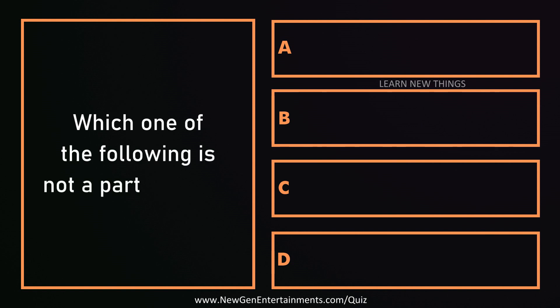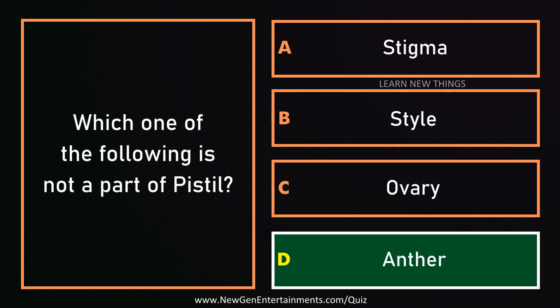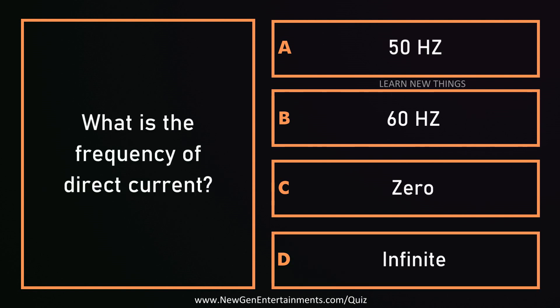Which one of the following is not a part of a pistil? Anther. What is the frequency of direct current? Zero.